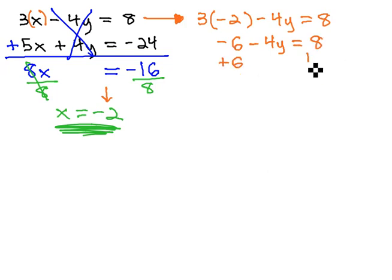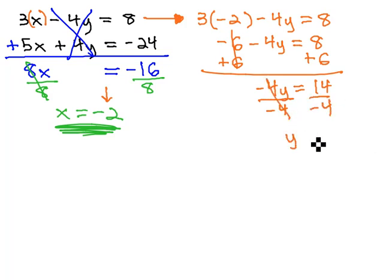If we add 6 to both sides, we get negative 4y equals 14, and dividing both sides by negative 4, it tells us that y is equal to negative 7 halves.